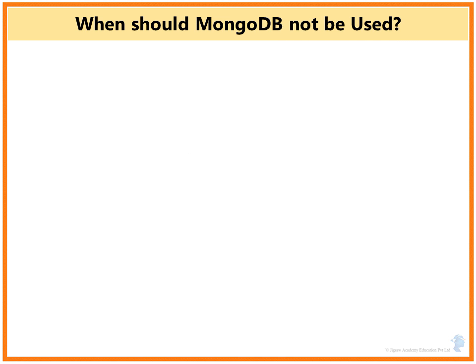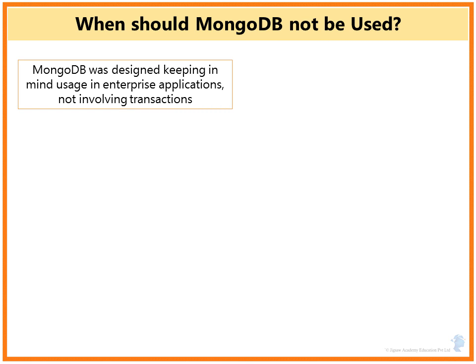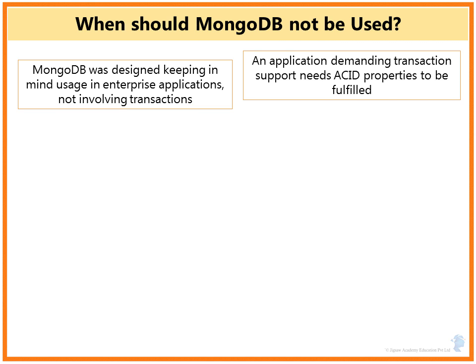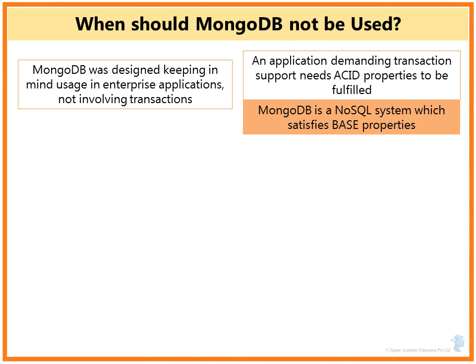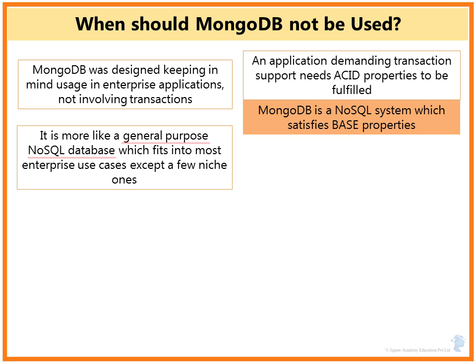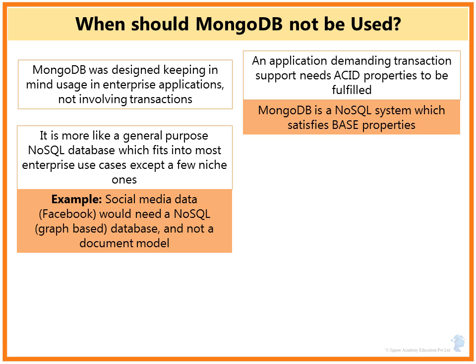When not to use MongoDB: MongoDB was designed for enterprise applications that do not involve transactions. Any application demanding transaction support needs ACID properties, but MongoDB is a NoSQL system that satisfies only BASE properties. It's a general-purpose NoSQL database fitting most enterprise use cases, barring a few niche ones. For example, a company like Facebook working with social media data would require a graph database, which is a better fit than MongoDB's document model, though MongoDB can still be used but less effectively.